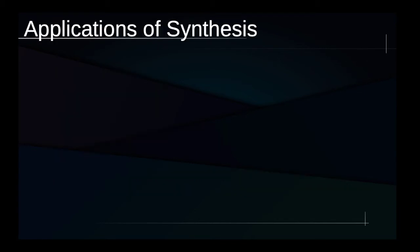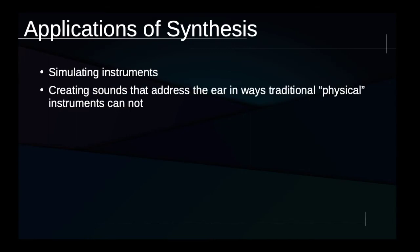Let's briefly think about some of the applications of synthesis. As we've seen with the TR-808 or the Mini Moog, one of the things that synthesizers have been used for is simulating other instruments — simulating drums, simulating keyboard instruments. They might also be used to create sounds that address the ear in ways traditional physical instruments cannot. Some of the sounds those instruments make resemble traditional instruments, but others have features that are due to their electronic nature.